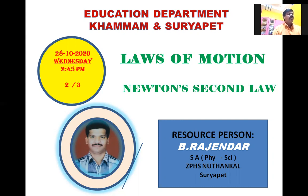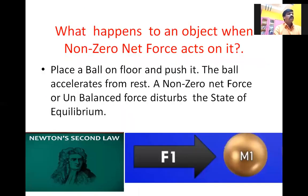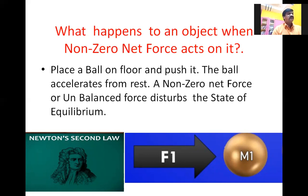Now, how does an object get motion? What happens to an object when a non-zero net force acts on it? If a non-zero net force acts on an object, it gives some net force — it is not equal to zero. That is known as unbalanced force.